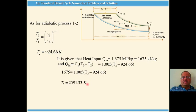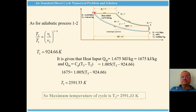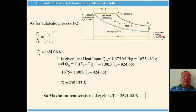So the first answer from our problem: the maximum temperature T3 of the cycle is 2591 kelvin. We now have P1, V1, T1; P2, V2, T2; and T3. Since process 2 to 3 is at constant pressure, P3 equals P2. We will now calculate V3.